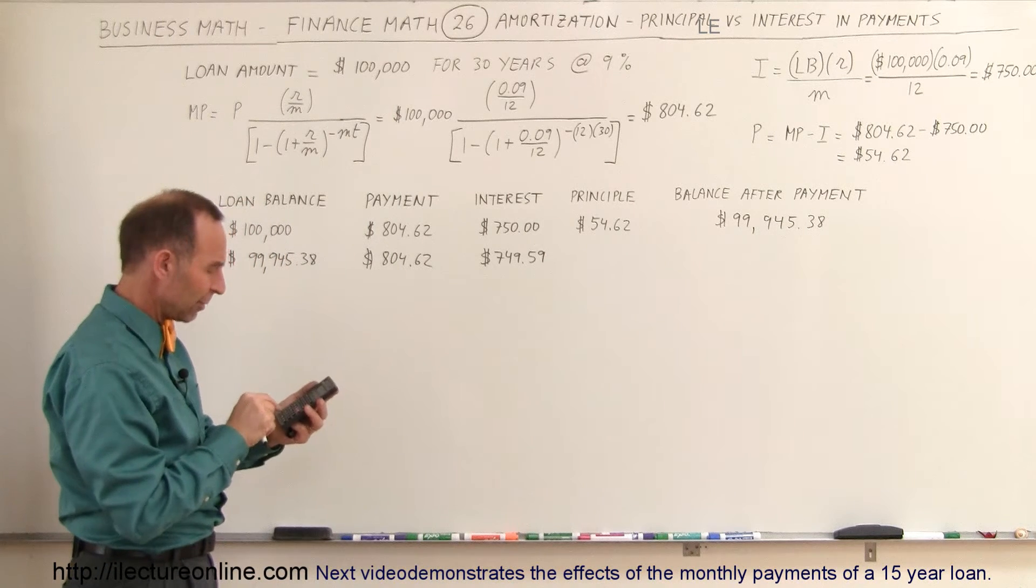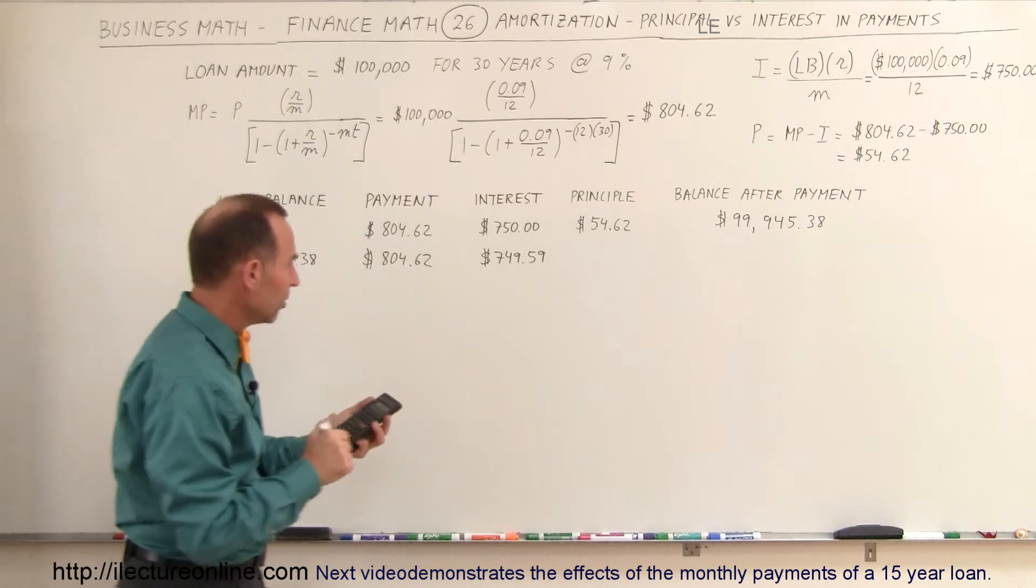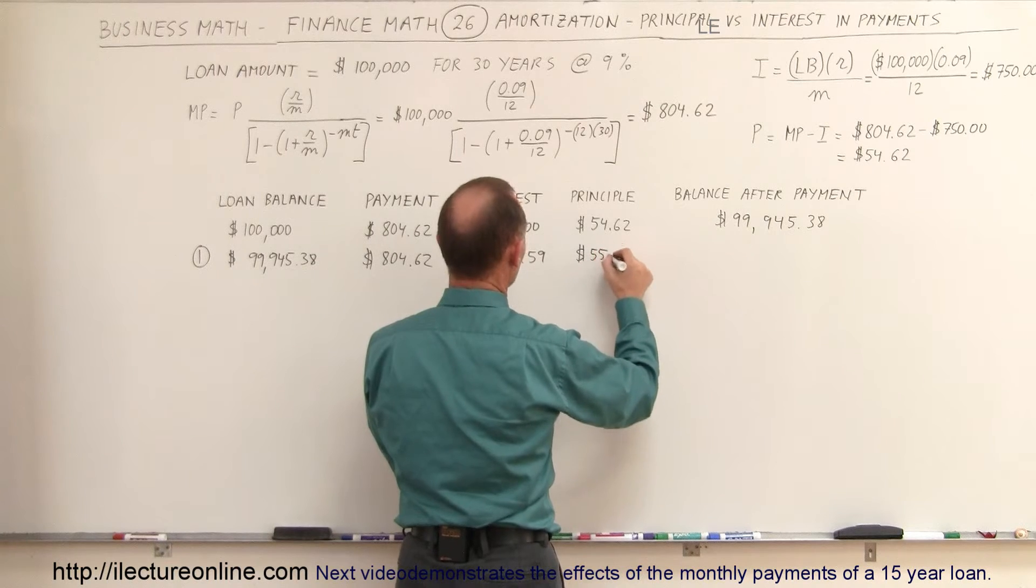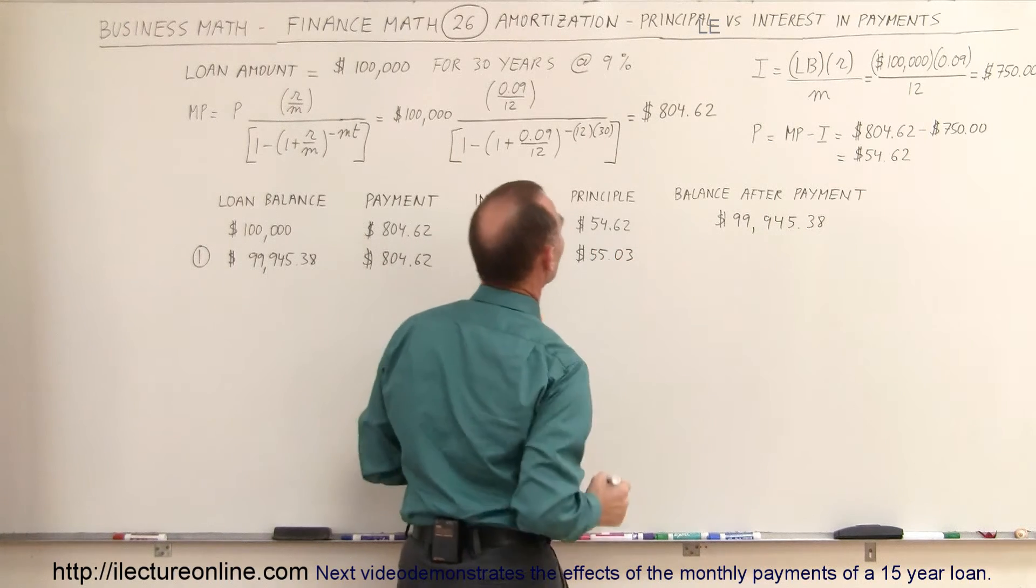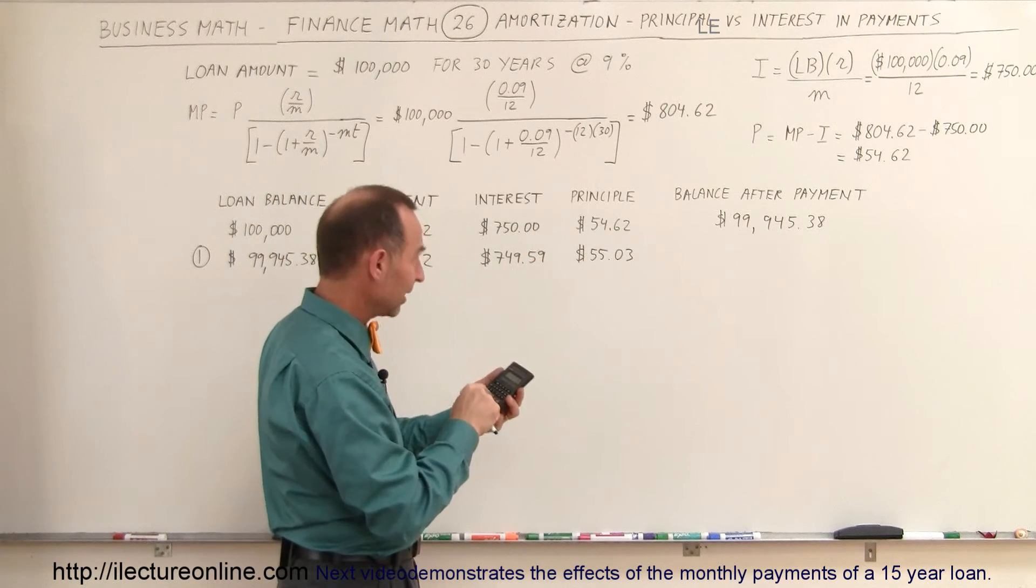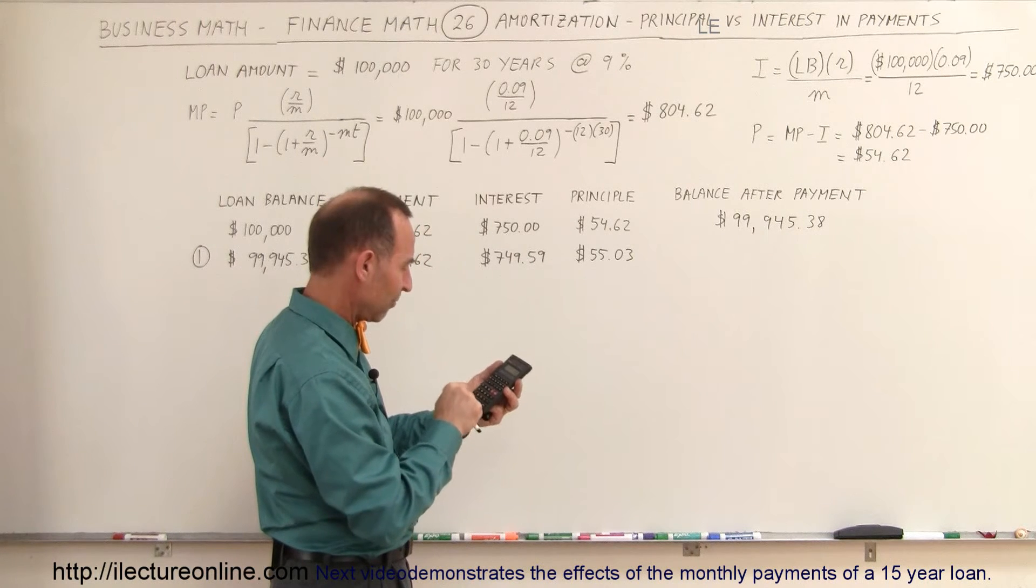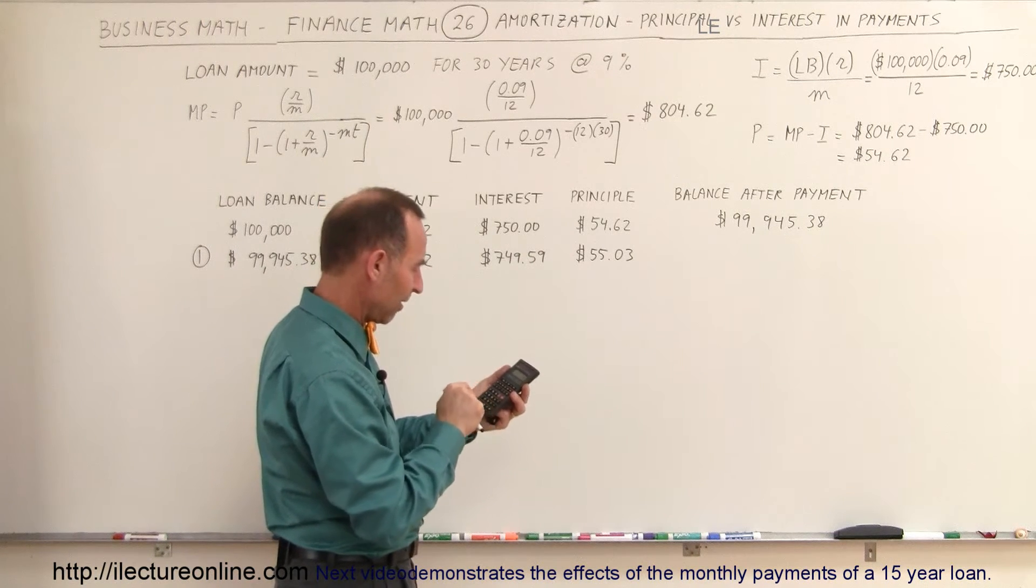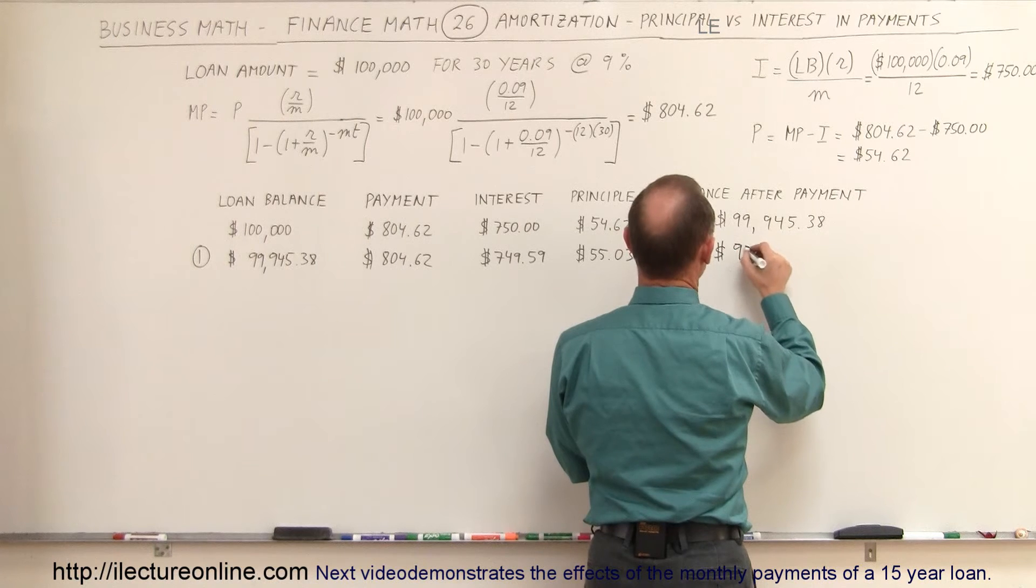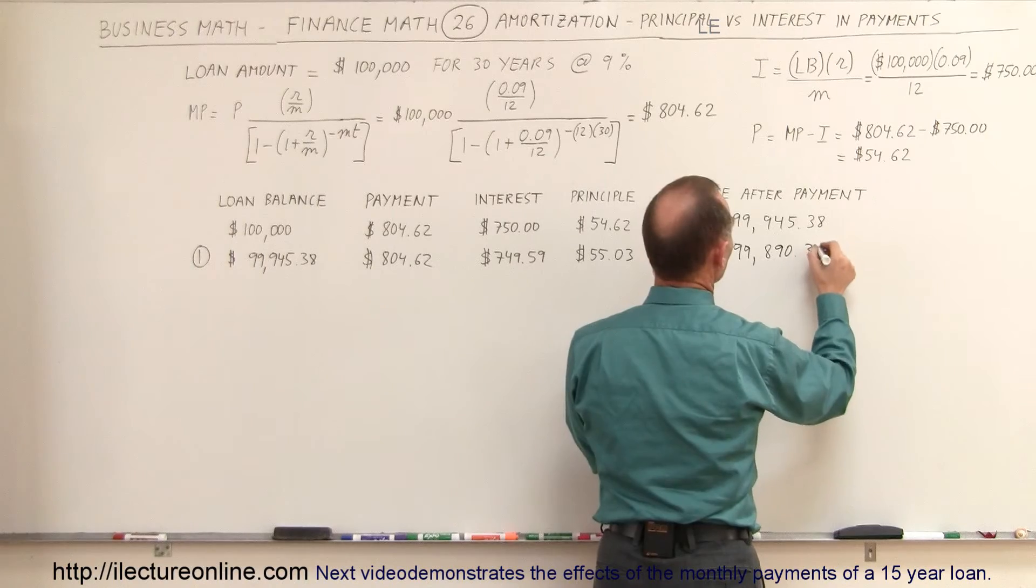If you subtract that from the payment of $804.62, you can then see that to the principal, we now have a total of $55.03 going to principal. So if you subtract $55.03 from that, so we have $99,945.38 minus $55.03 equals, so now, after making two payments, our loan balance now is $99,890.35.